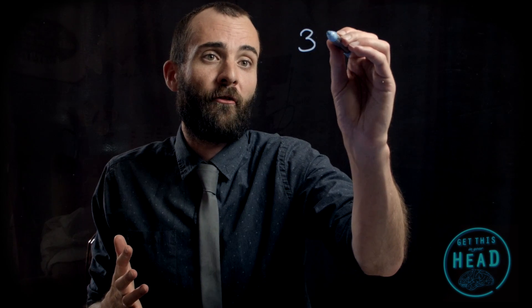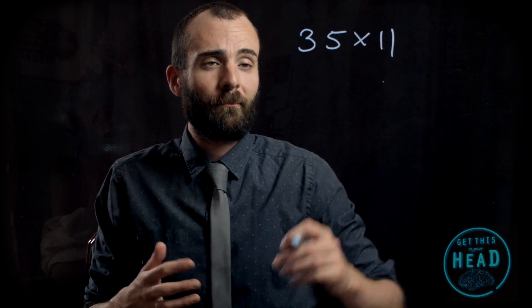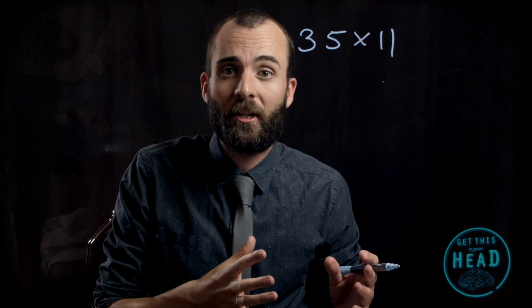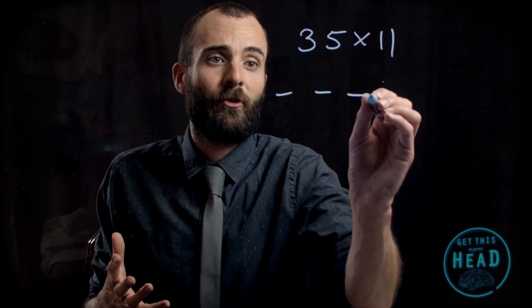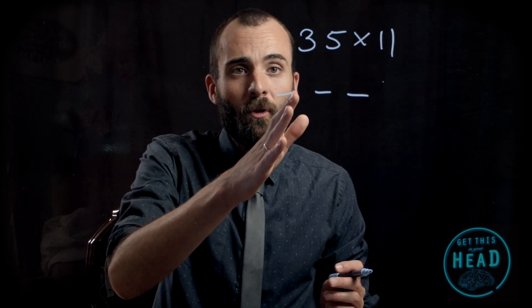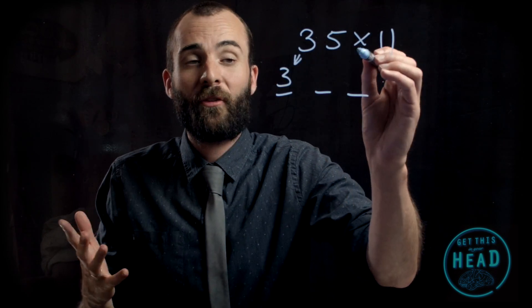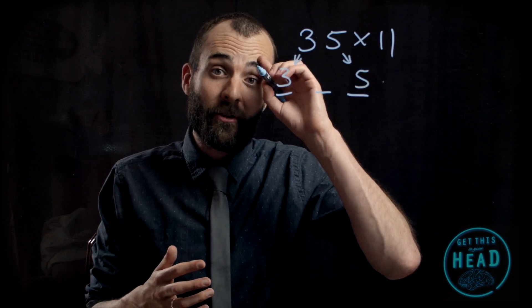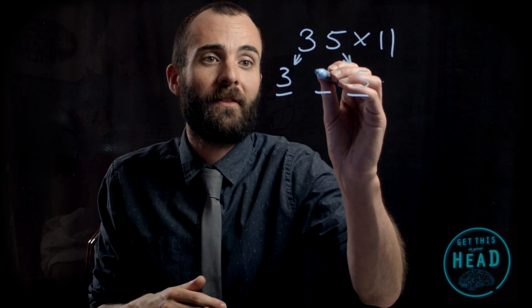Let's take a look at an example. Let's try 35 multiplied by 11. What we do is assume this is going to go from a two-digit number into a three-digit number. We're going to move the first number into the first position and the last number into the last position. Then for the middle position, all we have to do is add them together. 3 add 5 gives us 8, therefore 35 multiplied by 11 is 385.